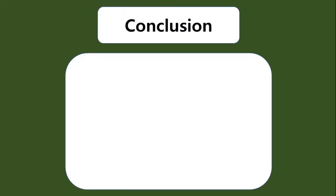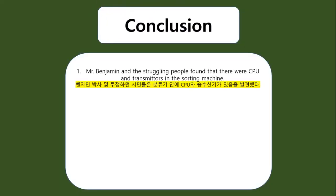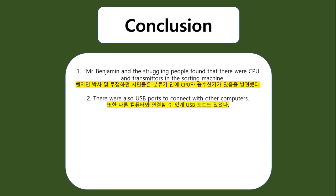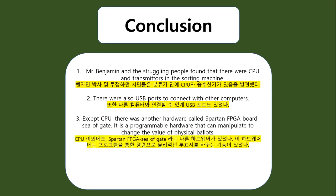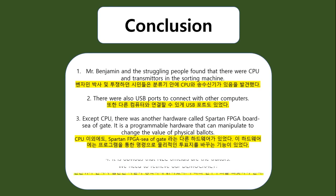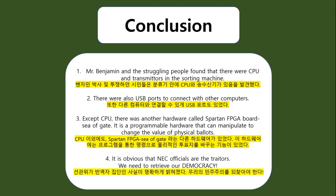Conclusion: 1. Mr. Benjamin and the struggling people found that there were a CPU and transmitters in the sorting machine. 2. There were also USB ports to connect with other computers. 3. Except the CPU, there was another hardware called a Spartan FPGA Board — a programmable hardware that can manipulate and change the value of physical logic. 4. It's obvious that NEC officers lied. We need to retrieve our democracy.